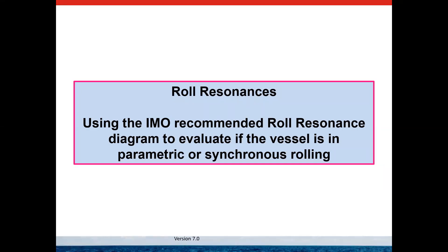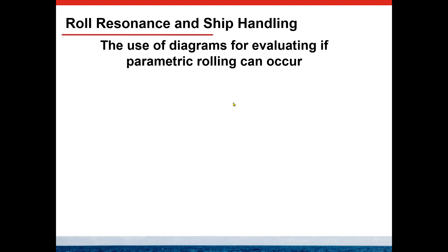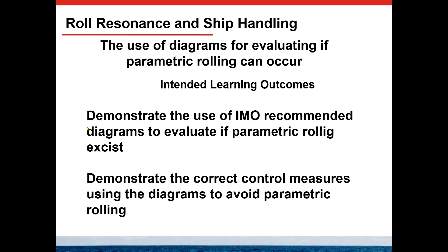In this lesson we will discuss raw resonances and using the IMO recommended raw resonance diagram to evaluate if the vessel is in parametric or synchronic rolling. The raw resonances were already discussed before; now we are concentrating on the application using the IMO recommended diagram. The intended learning outcome is to demonstrate the use of the IMO recommended diagrams to evaluate parametric or synchronic rolling and demonstrate the correct control measure using the diagrams to avoid parametric rolling.